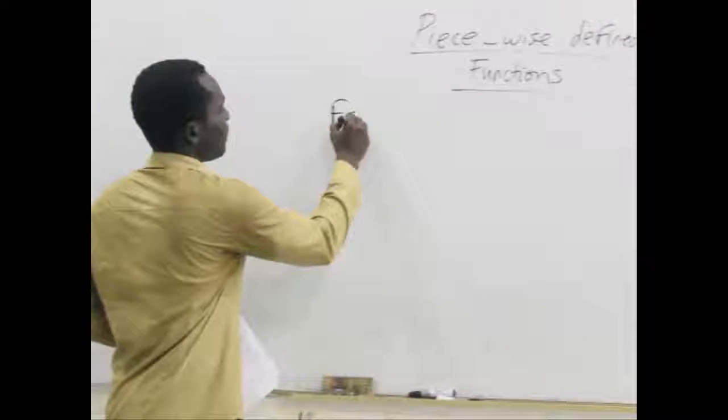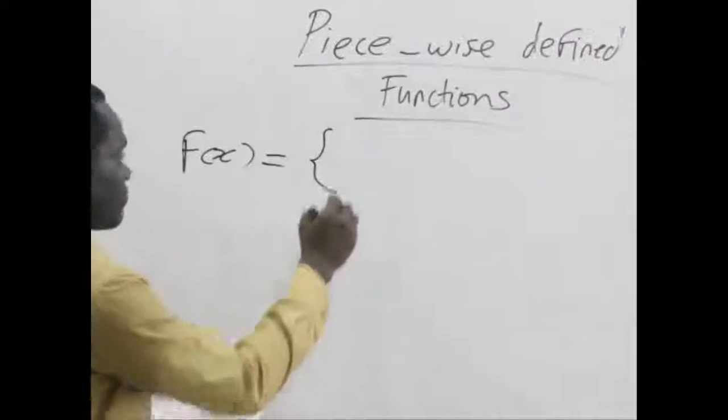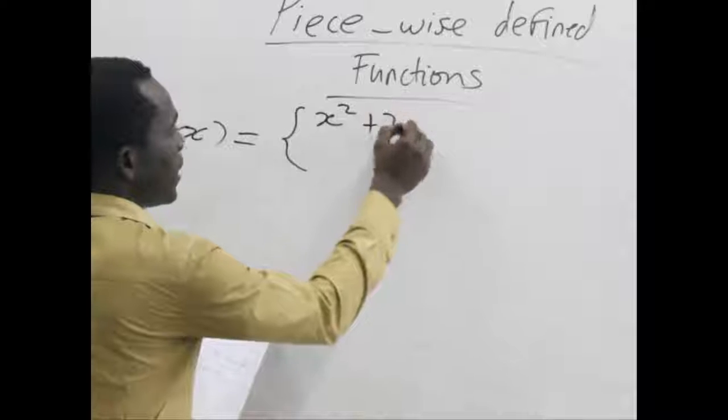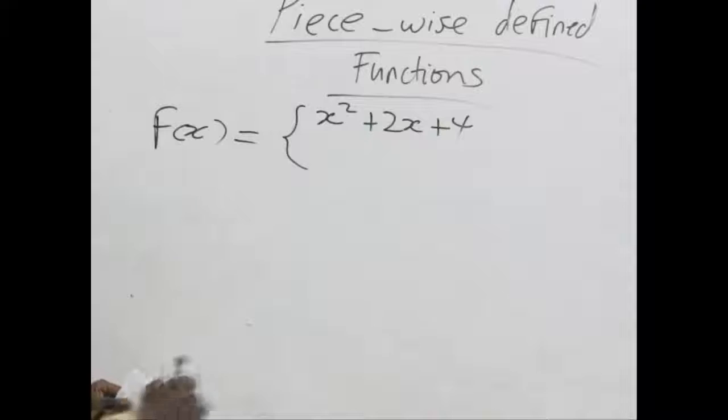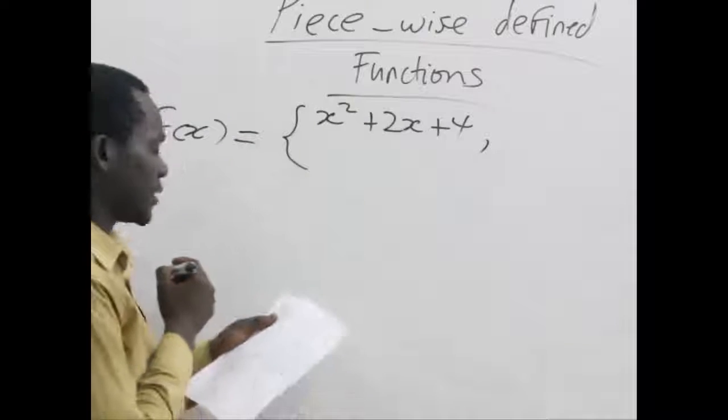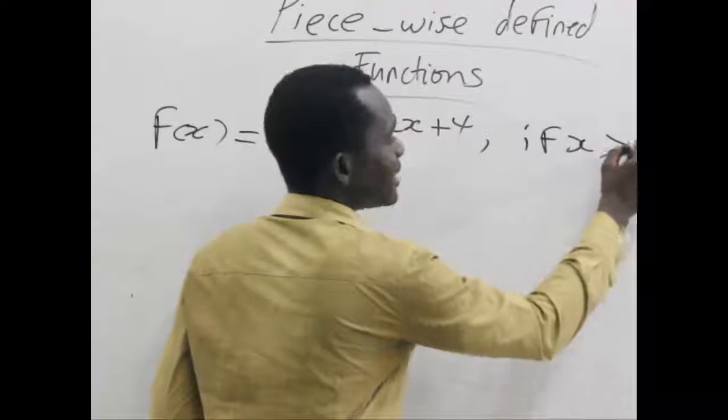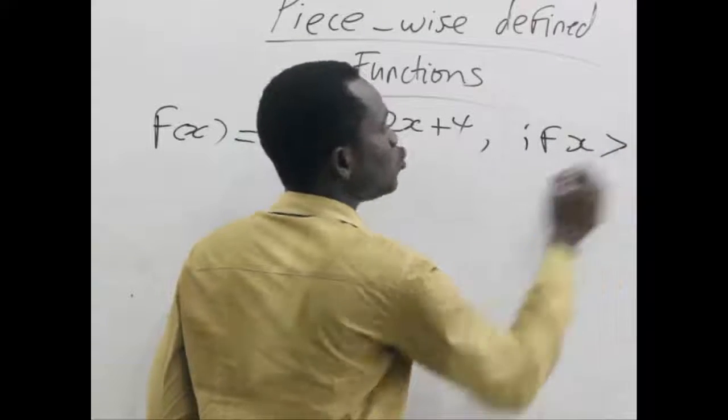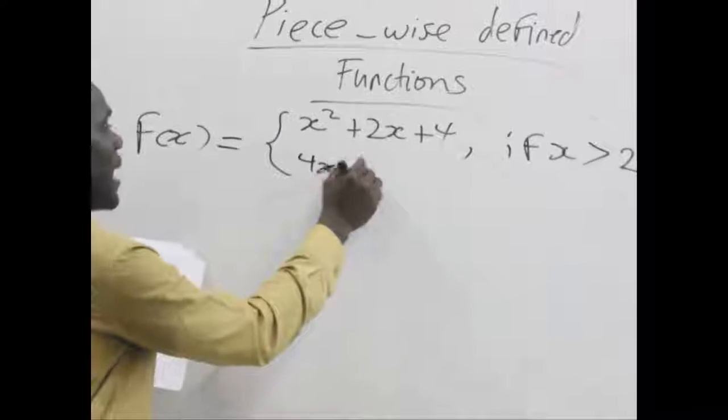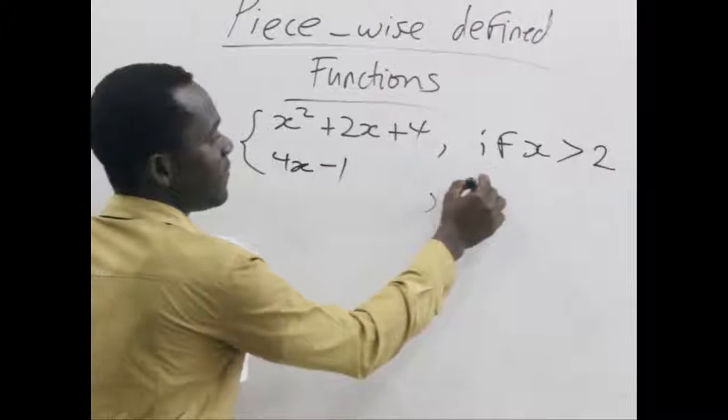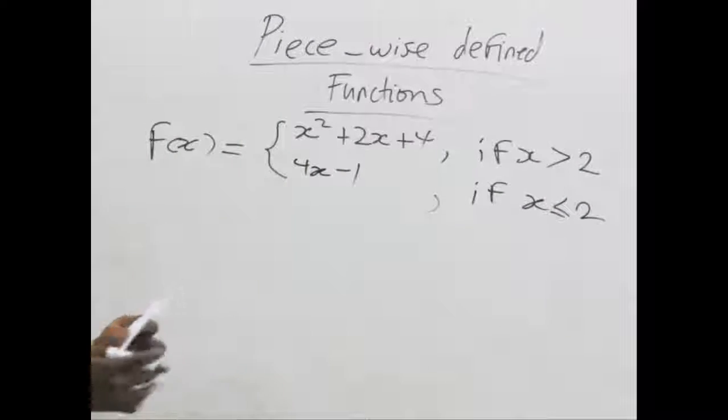Assuming we have a function which is f of x. But it's being defined piecewise as x squared plus 2x plus 4. That is one part of the function. And this function only works if the values of x are greater than 2. And the other function which is 4x minus 1. Now this works if the values of x are less or equal to 2.